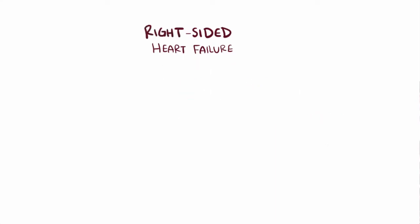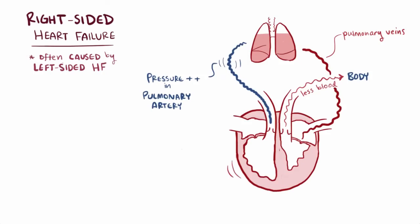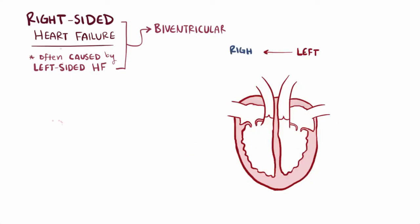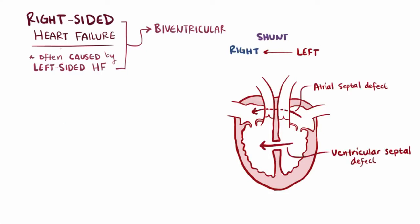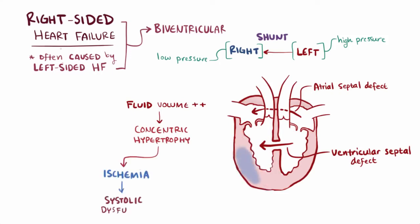Right-sided heart failure is actually often caused by left-sided heart failure. Remember how fluid buildup increased the pressure in the pulmonary artery? That increased pulmonary blood pressure makes it harder for the right side to pump blood, making the heart failure biventricular. Someone can also have isolated right-sided heart failure — for example, from a left-to-right cardiac shunt like an atrial septal defect or a ventricular septal defect, which allows blood to flow from the higher-pressure left side to the lower-pressure right side. This increases fluid volume on the right side and can lead to concentric hypertrophy of the right ventricle, making it more prone to ischemia — a systolic dysfunction — and have a smaller volume and become less compliant, which is a diastolic dysfunction.